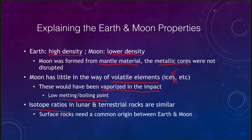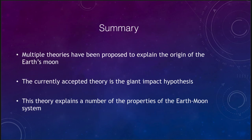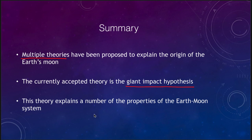To summarize: there have been multiple theories proposed to explain the origin of the Earth's moon, and why it is the only object in the inner solar system with a large moon. The currently accepted theory is the giant impact hypothesis, which suggests that a large Mars-sized object crashed into the very early Earth, or proto-Earth, as it was forming. This theory can explain a number of the properties of the Earth-moon system that are otherwise difficult to explain.